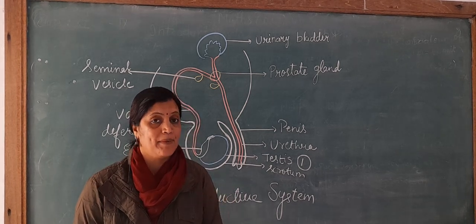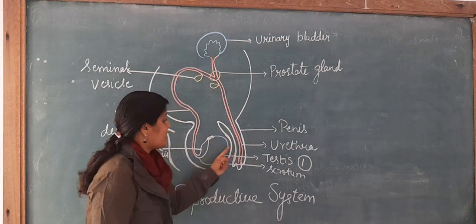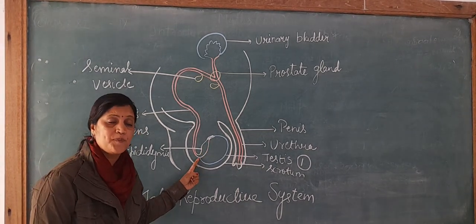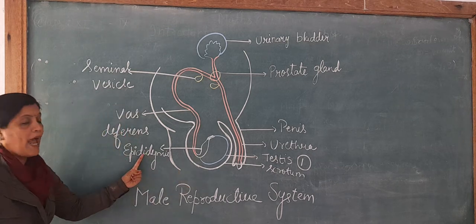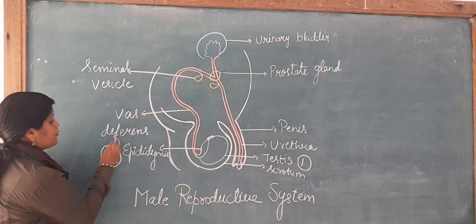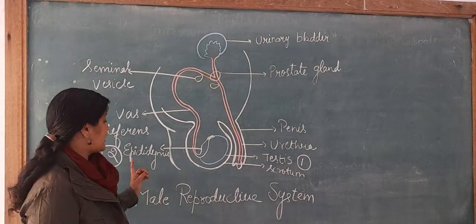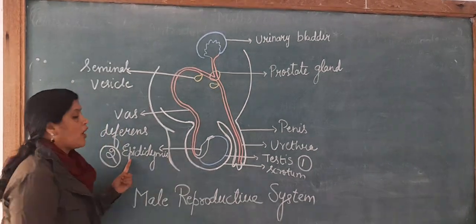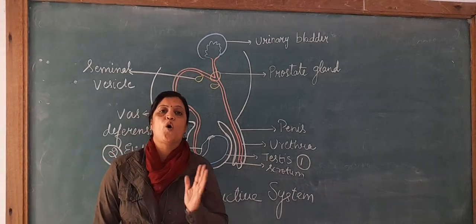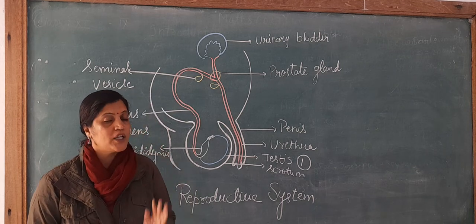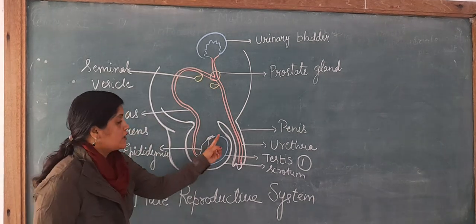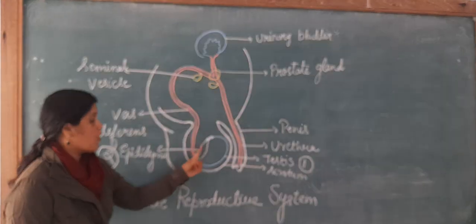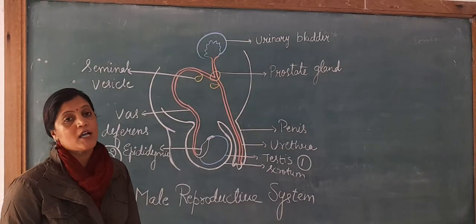Sperms are male gametes. When the testis releases sperms, they enter a coiled tube-like structure attached just above the testis, which is called the epididymis. This is the second main part of the male reproductive system. The epididymis is also called the storage house of sperms, because the sperms released by the testis come and collect inside the epididymis.